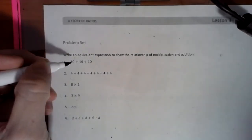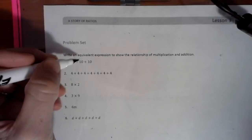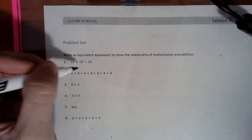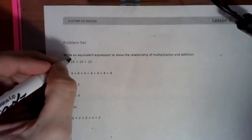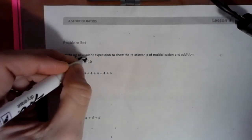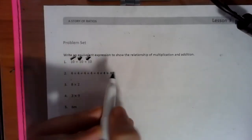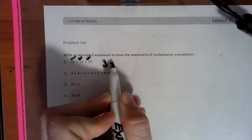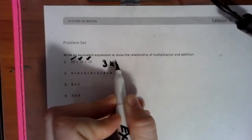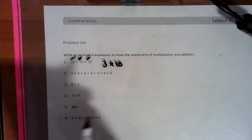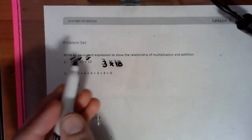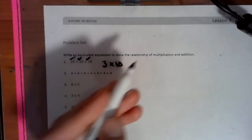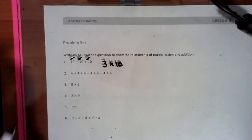So if you see here, we have 10 plus 10 plus 10, and we have to think about how many 10s we have. We can do this fairly fast — we have three 10s. So we have 3 times 10, and 3 times 10 is 30. 10 plus 10 plus 10 is 30. That is what we are doing.